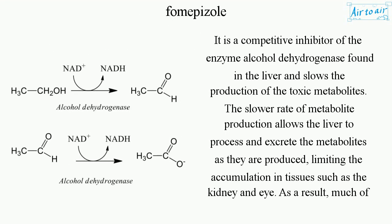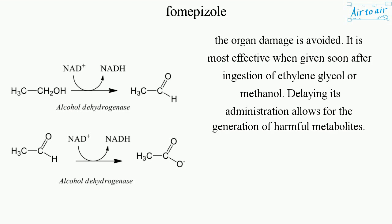It is a competitive inhibitor of the enzyme alcohol dehydrogenase found in the liver and slows the production of toxic metabolites. This lower rate of metabolite production allows the liver to process and excrete the metabolites as they are produced, limiting accumulation in tissues such as the kidney and eye. As a result, much of the organ damage is avoided. It is most effective when given soon after ingestion of ethylene glycol or methanol.